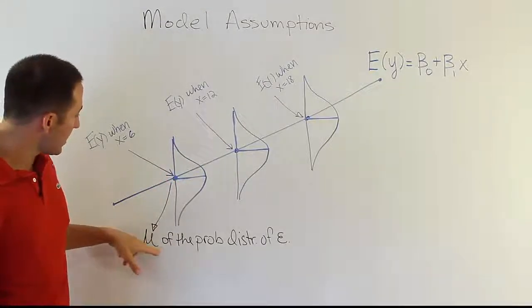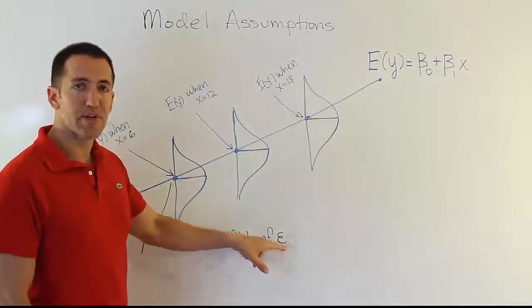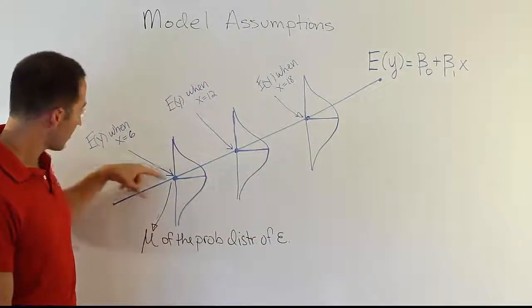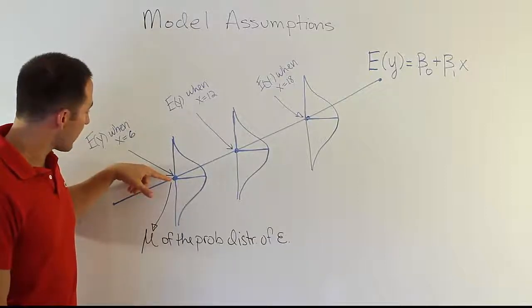So essentially, first thing you want to notice is that the mean of the probability distribution of the error term is given by that location right there, which is the spot on our regression line.